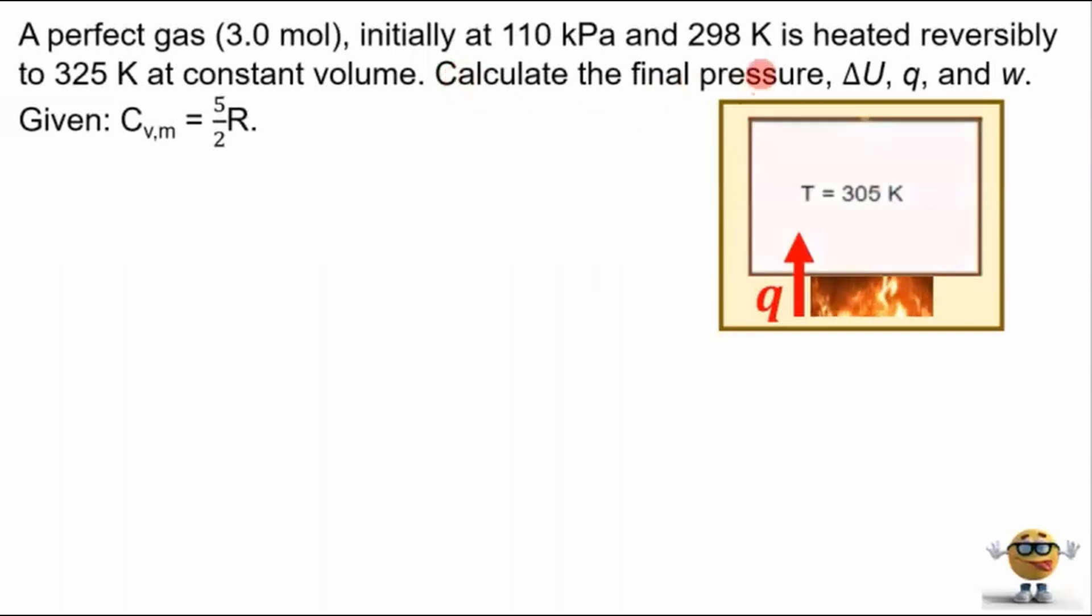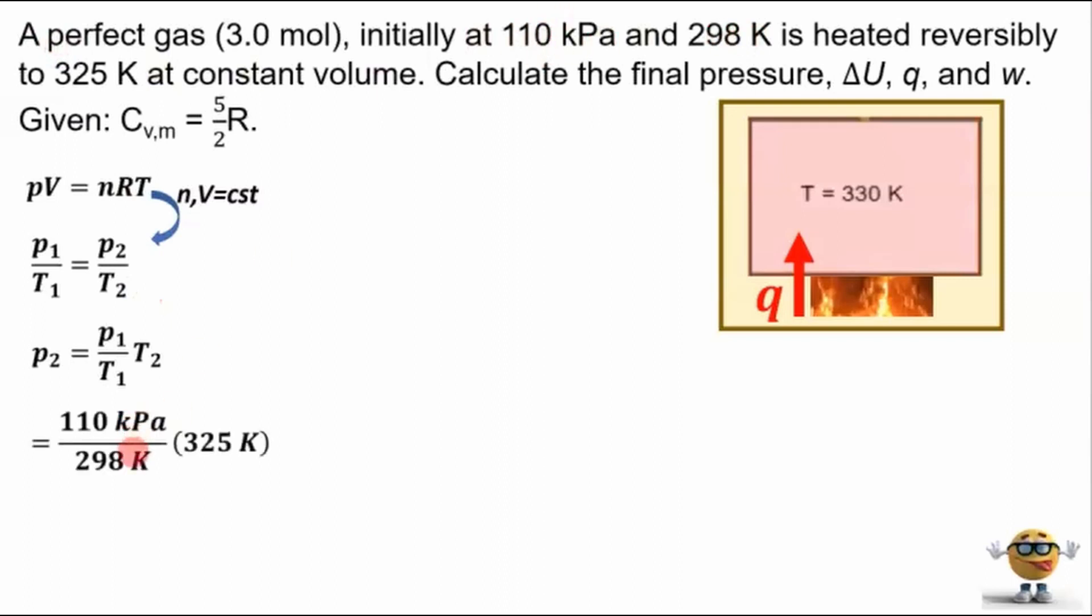Now, let's solve for the final pressure first, and we're going to do that using the perfect gas equation. And because the number of moles and the volume is constant, we can set up this relation as P1 over T1 equals P2 over T2, and solve for P2. So that's just equal to P1 over T1 times T2. And now we have everything we need. We have the two temperatures, we have the initial pressure, so we'll plug those in.